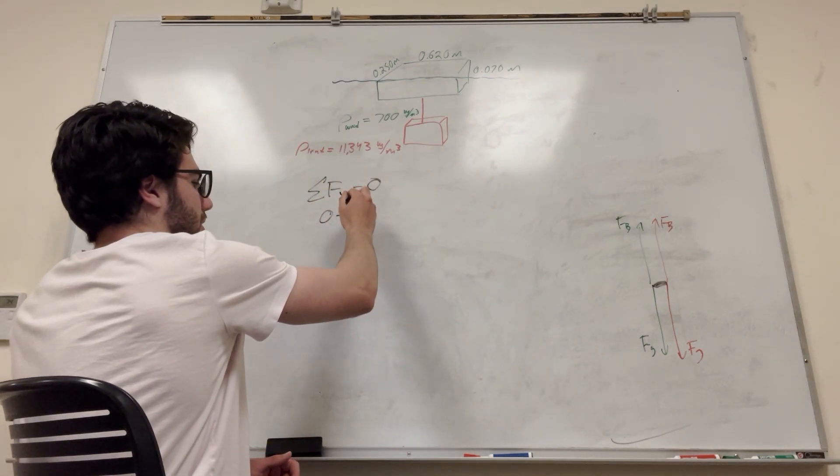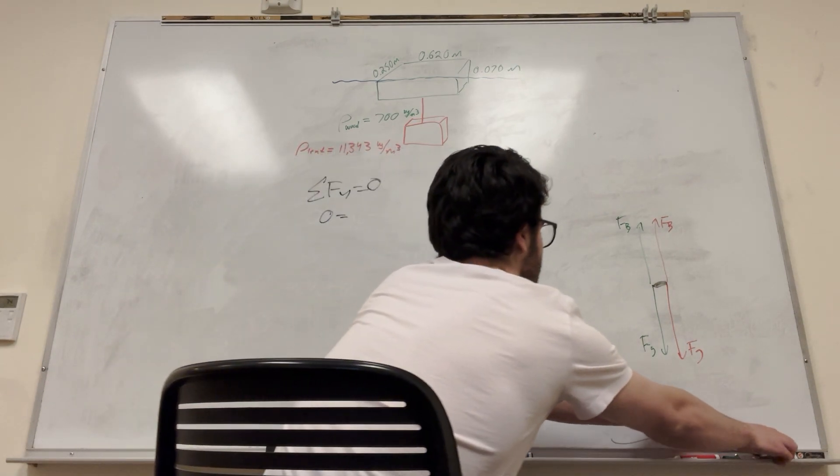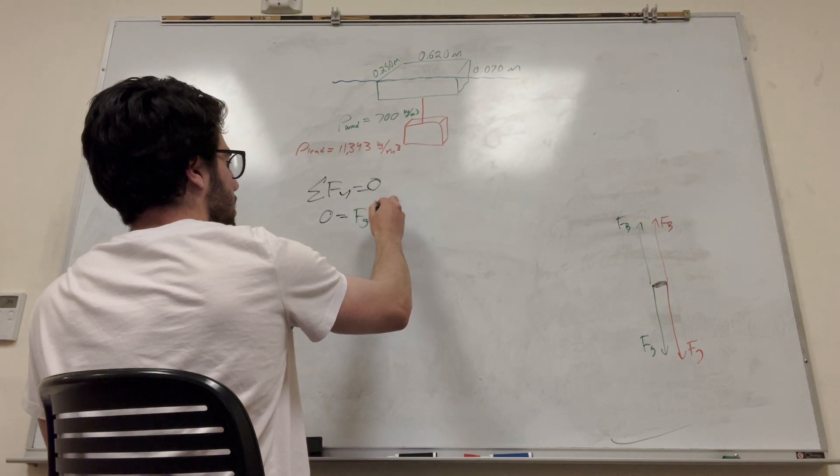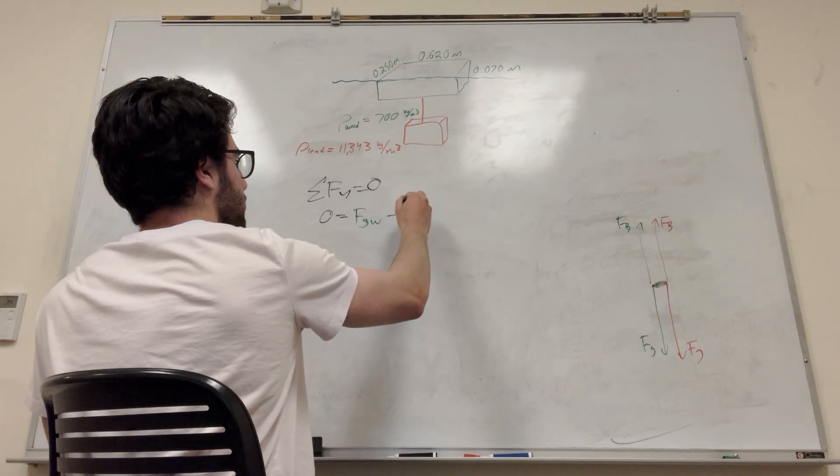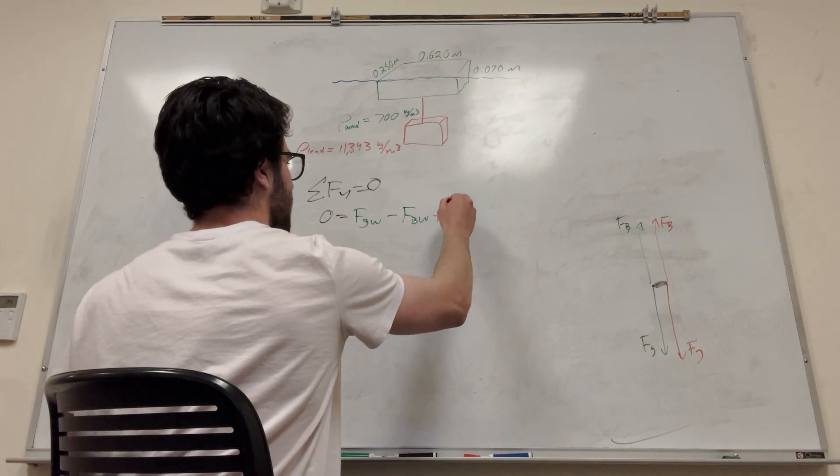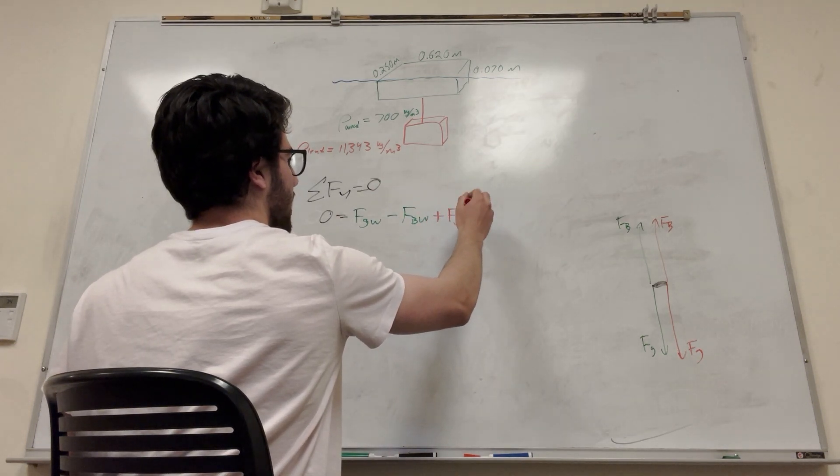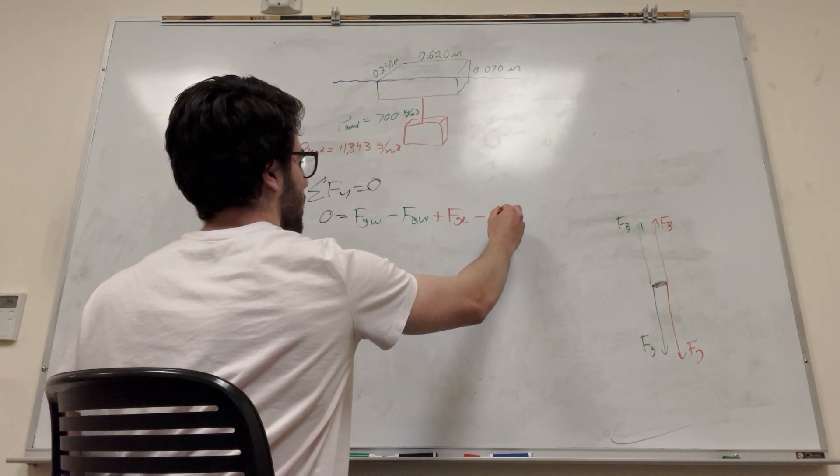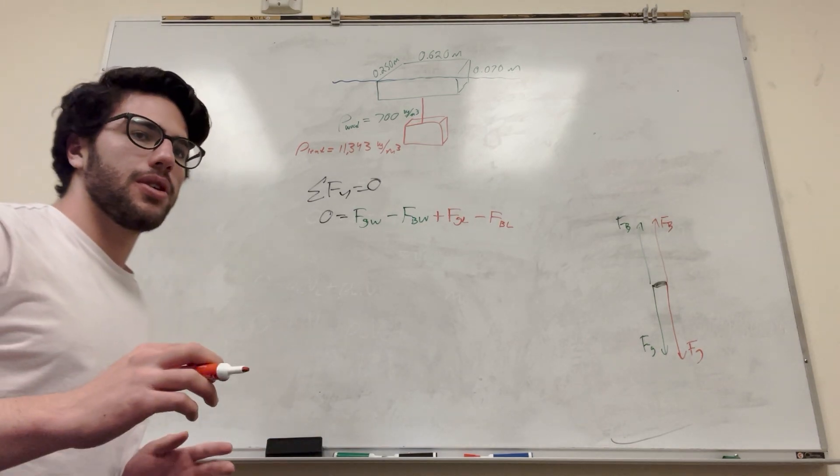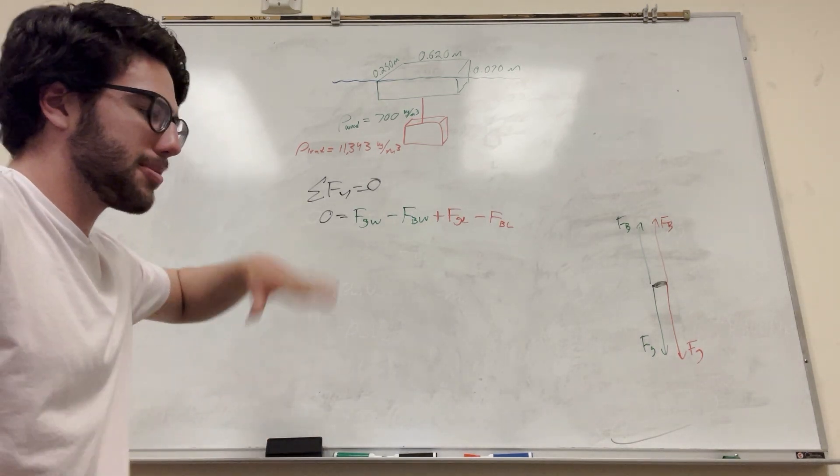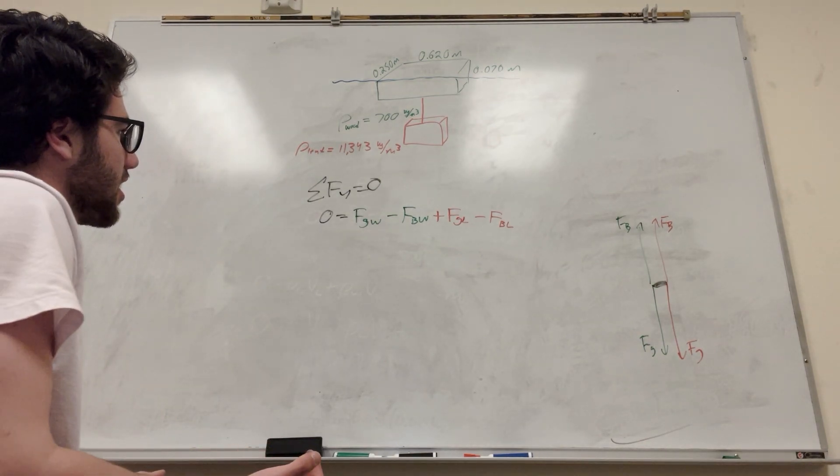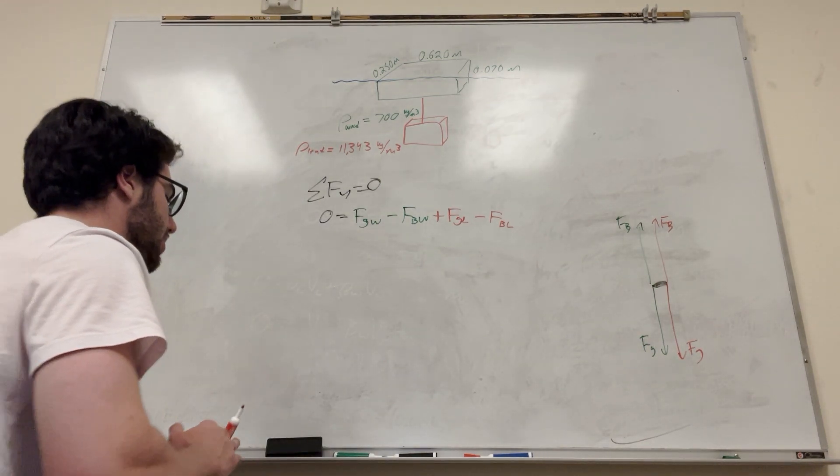So we know that all of this is going to be equal to zero. So let's just add them up. So we got, I guess we can use different colors for this. So let's expand this, right? It's always what you want to do.